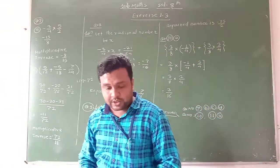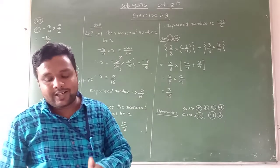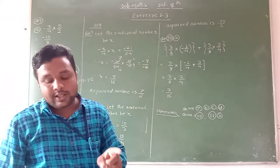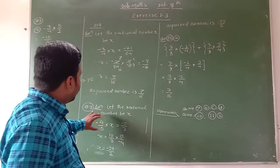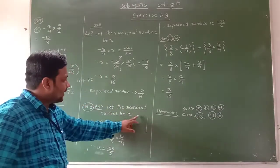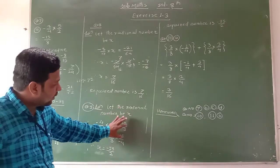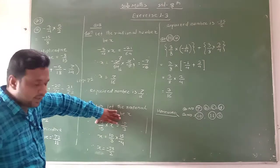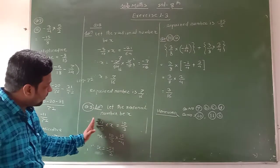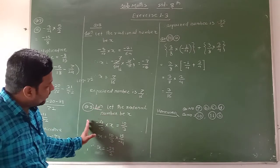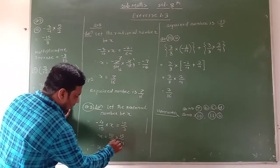Now see the next question, question number 9. The product of 2 numbers is 10 upon 3. If one number is minus 4 upon 15, find the other number. Therefore, let the rational number be x. The product of the two numbers: minus 4 upon 15 into x is equal to 10 upon 3. According to the condition, we put the equation. We solve the equation: x is on the left-hand side, equal to 10 upon 3 on the right-hand side. We transfer minus 4 upon 15, which is in multiplication with x — when we transfer, it becomes 15 upon minus 4.